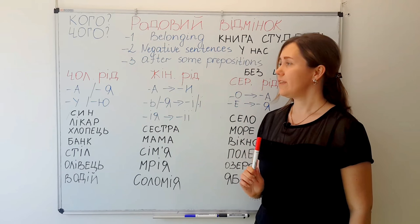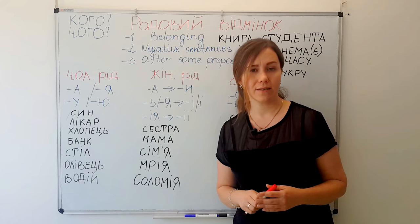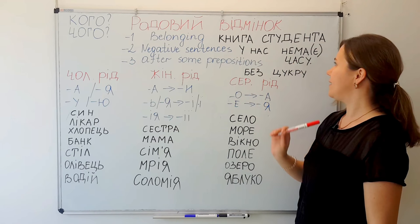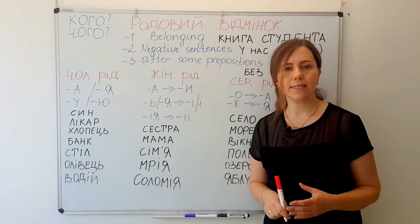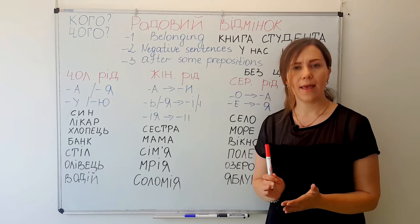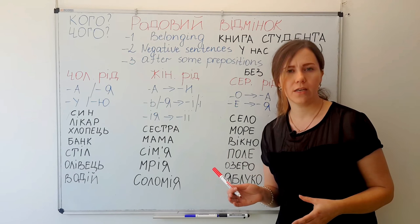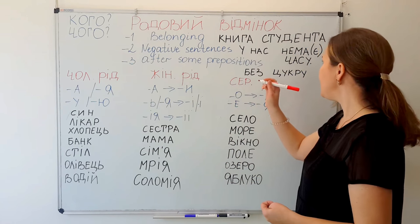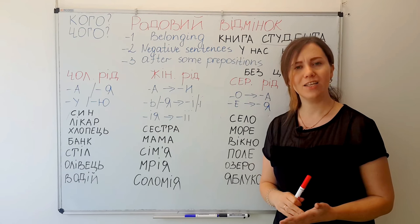First: belonging. With the help of this case we can show that something belongs to someone — we can express possession. For example: книга студента. Книга means 'a book' in the nominative case. Студент means 'a student,' but here it's written студента, meaning 'the book of a student' or 'student's book.' So студент is in the родовий відмінок — genitive case.